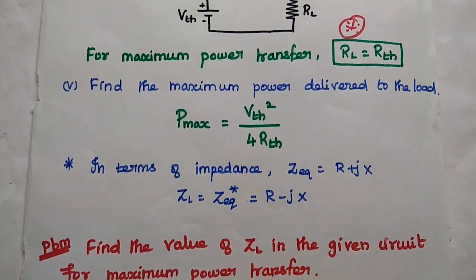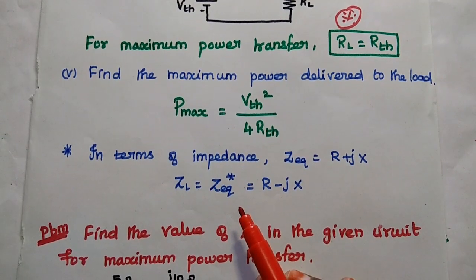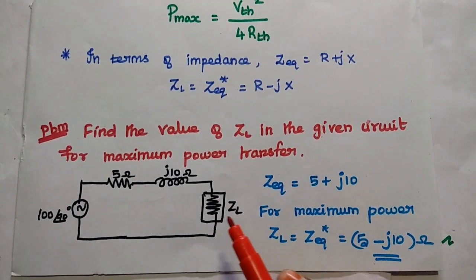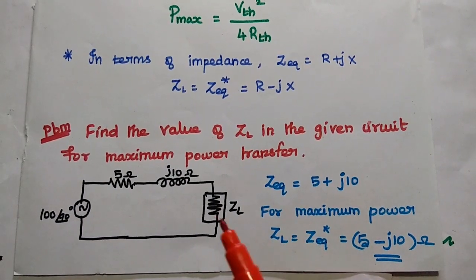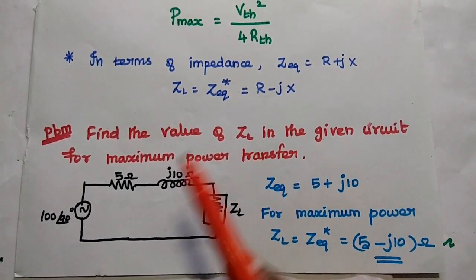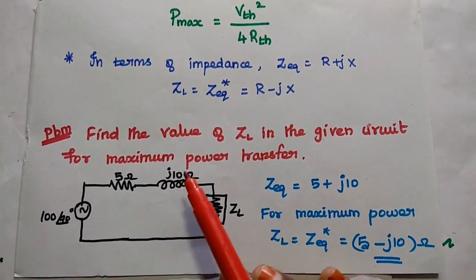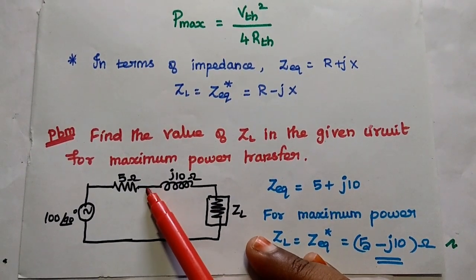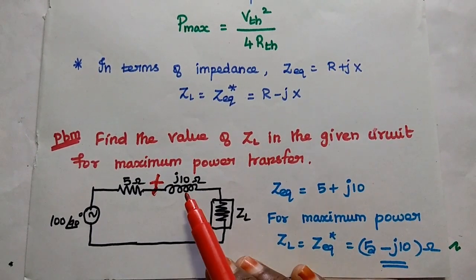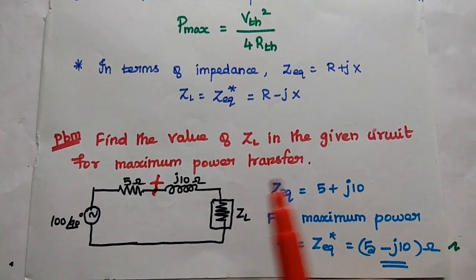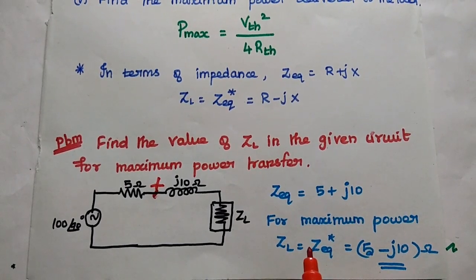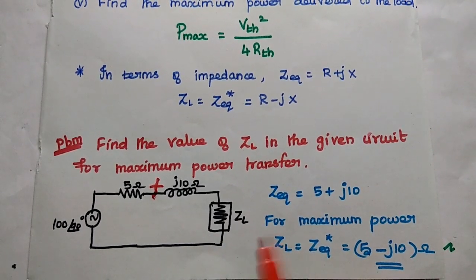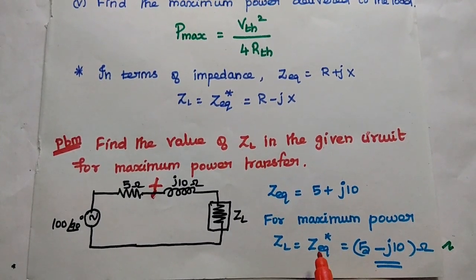In terms of impedance, the load impedance ZL should be the complex conjugate of the equivalent impedance. Let's solve one simple problem: find the value of ZL in the given circuit for maximum power transfer. The equivalent impedance is 5 ohm resistance with inductive reactance J10 ohm connected in series, giving Z_eq = 5 + j10 ohm. For maximum power transfer, the load impedance should be the complex conjugate: ZL = 5 − j10 ohm.